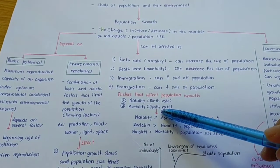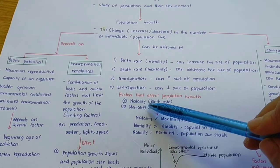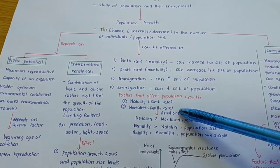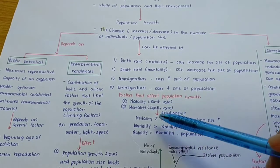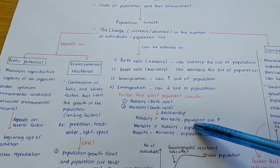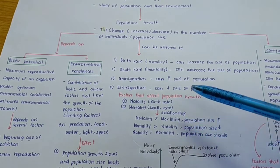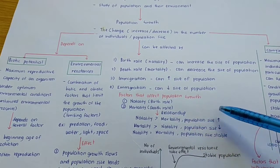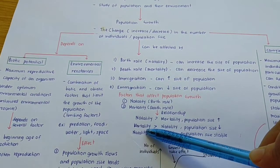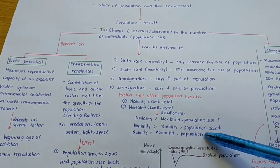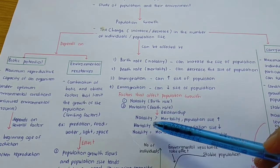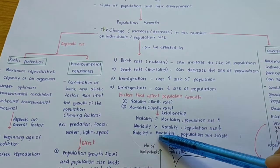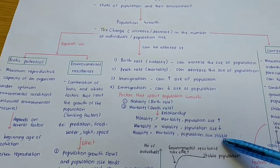So these are the factors that affect population growth. Natality means birth rate — kadar kelahiran. Mortality is death rate — kadar kematian. If natality is greater than mortality, the population size will be increased. If mortality is greater than natality, the population size will be decreased, because the death rate is higher than birth rate. And if natality is equal to mortality, the population size will be stable.